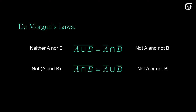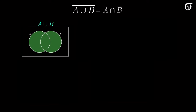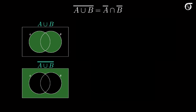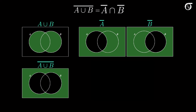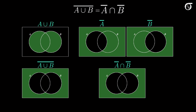Let's illustrate De Morgan's laws using Venn diagrams. Here's De Morgan's first law; let's first look at the left-hand side. The union of A and B is everything that is in either A or B, or both, represented by this green region. The complement of the union is everything outside of those two circles. Now for the right-hand side: A complement is everything outside of A, and B complement is everything outside of B. Their intersection is the region that is in both A complement and B complement — the region that is green in both plots. So the intersection of A complement and B complement is the region outside of the two circles. These two regions are the same, and that's what De Morgan's first law tells us.